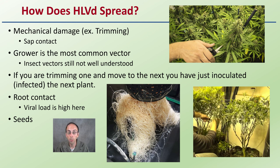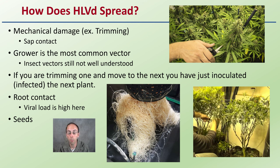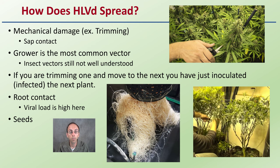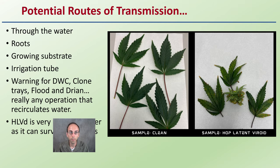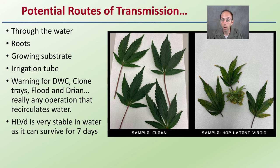In addition to trimming the above portions of the plant, root contact is another route — this could be physical root contact or water carrying the viroid from the roots of one plant to another. This is where the viroid load is actually very high early on. Seeds are another potential method of transmission for hop latent viroid, and it can also go through the water.